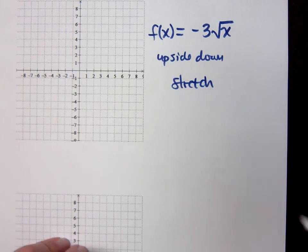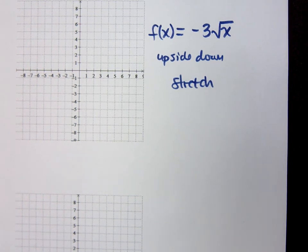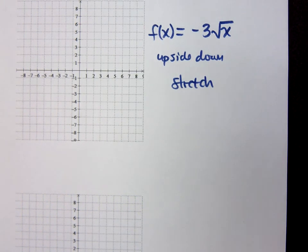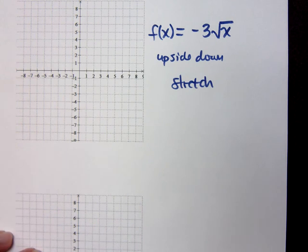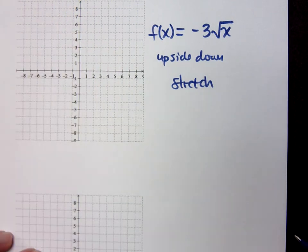Now, this is only a coincidence. The ones we had in the last example, they were both compressions and they were both positive. And these guys are both negative and both stretches. It's a coincidence. So you're saying all negative ones are stretches? I said it's a coincidence. Don't do that.